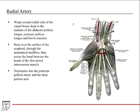The radial artery begins in the cubital fossa of the brachial artery, travels through the forearm, and then when it gets to the wrist, it wraps around the radial side of the carpal bones, deep to the tendons of the abductor pollicis longus, the extensor pollicis longus, and the extensor pollicis brevis muscle. You can see it traveling deep to those muscles in the forearm. It runs over the surface of the scaphoid, through the anatomical snuff box as we discussed.